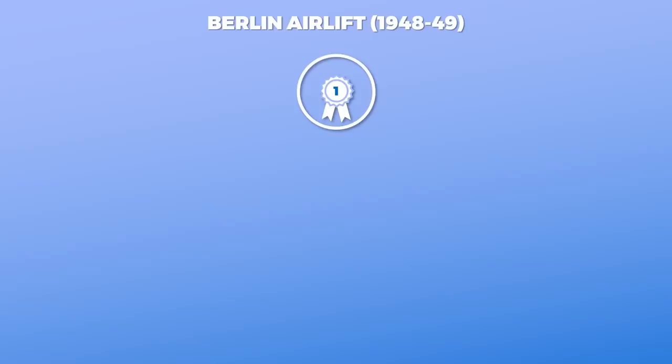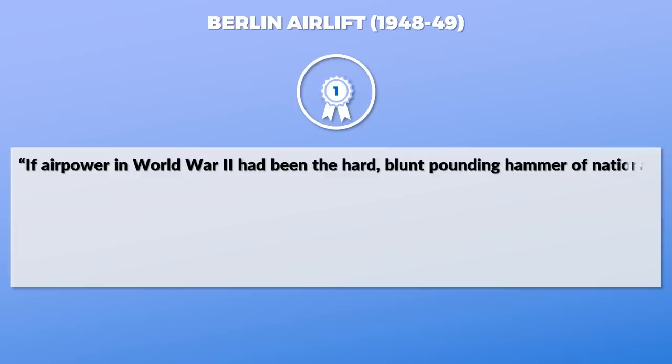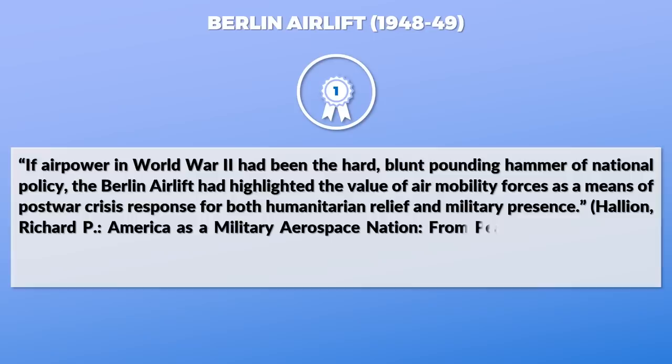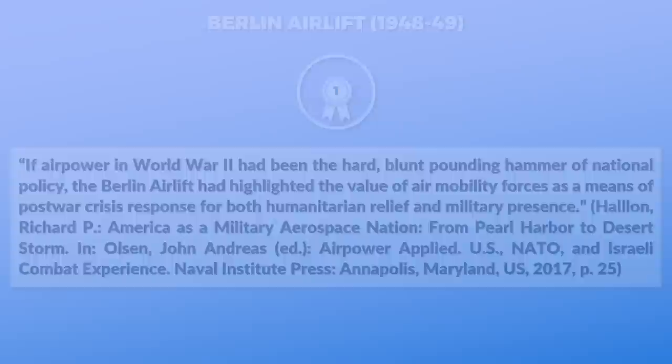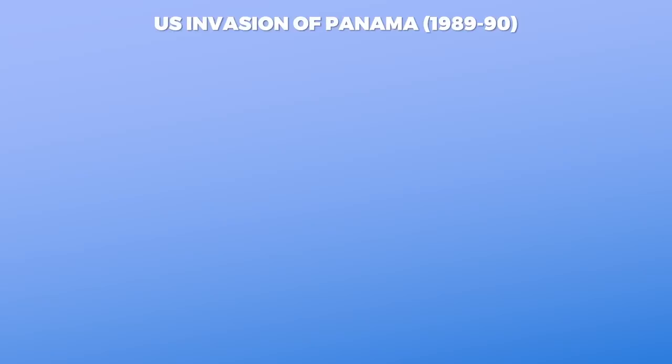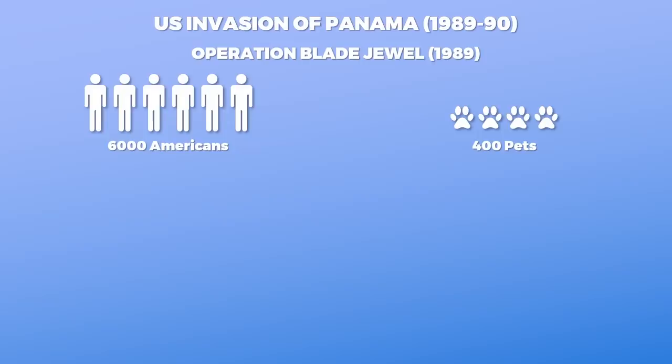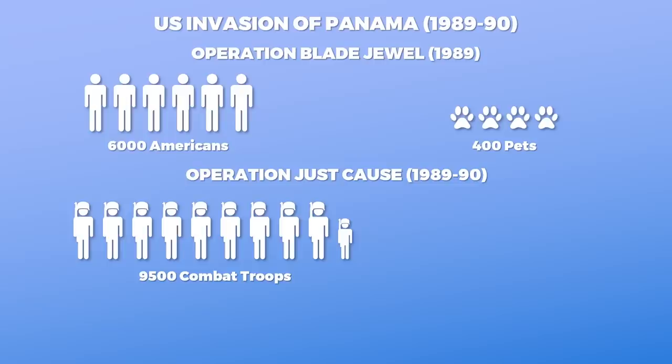If air power in World War II had been the hard, blunt, pounding hammer of national policy, the Berlin Airlift highlighted the value of air mobility forces as a means of post-war crisis response for both humanitarian relief and military presence. Other major airlifts happened during Operation Just Cause, the US invasion of Panama in 1989 to 1990. In Operation Brave Jewel, about 6,000 Americans including 400 pets were brought back to the United States. Later, in less than 36 hours, 9,500 combat troops were delivered to Panama, with tanker planes delivering an average of 860,000 gallons of fuel per day. This experience proved very useful during Operation Desert Shield, the second largest airlift in history, which was the buildup for Operation Desert Storm.